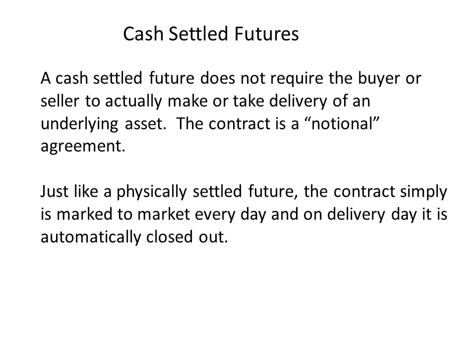Just like physically settled futures contracts, the cash settled futures contract during its lifetime is still going to be marked to market. In other words, gains and losses associated with a futures position — in other words variation margin — are going to be paid and received right up until the last day in the life of the futures contract. All that happens on the last day is that the position is closed out at the final futures price. The gains and losses can then be used to offset potentially any adverse movements in the underlying position of the hedger.